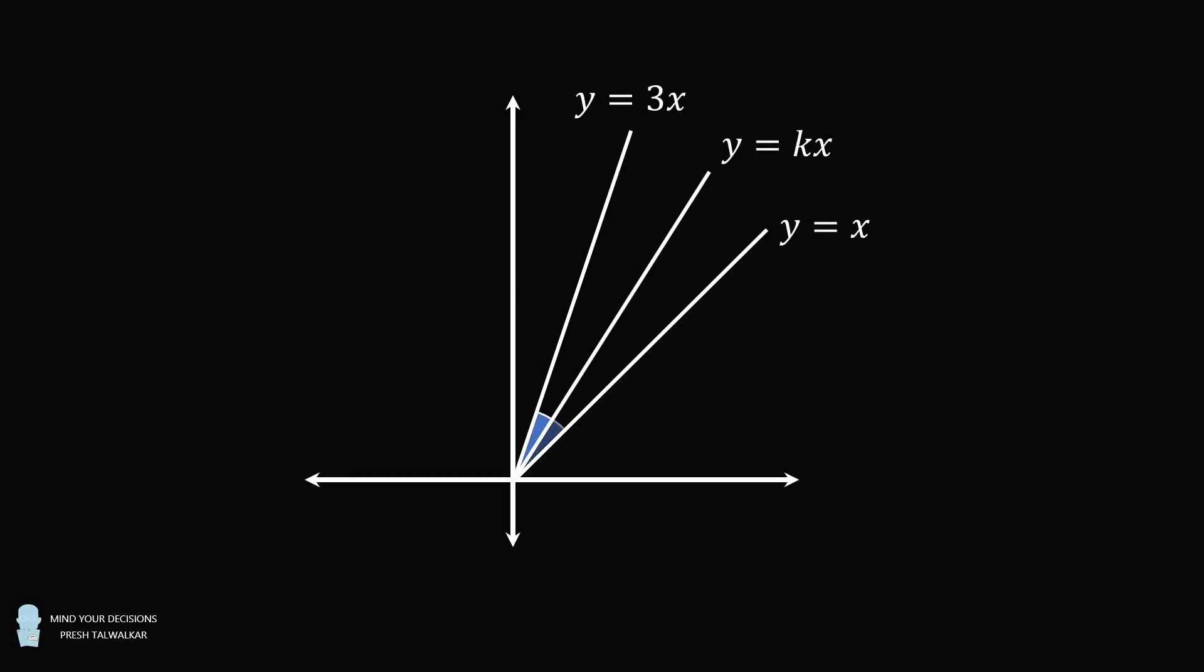Hey, this is Presh Talwalkar. In the first quadrant, graph the lines y equals 3x and y equals x. If y equals kx is the angle bisector of the angle between these two lines, what is the value of k equal to?